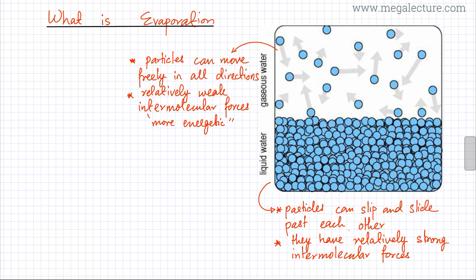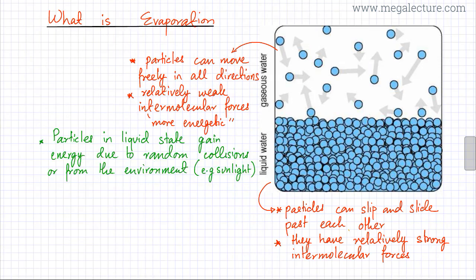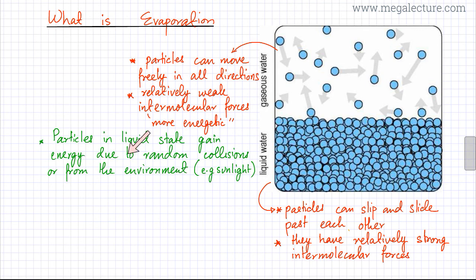In gaseous state, particles are able to overcome those intermolecular forces and stay as far away from each other as possible. To describe evaporation: particles in liquid state are able to gain energy due to random collisions or from the environment. These particles are colliding, slipping, and sliding past each other, so some particles might gain energy.